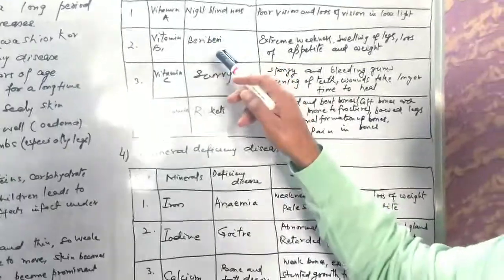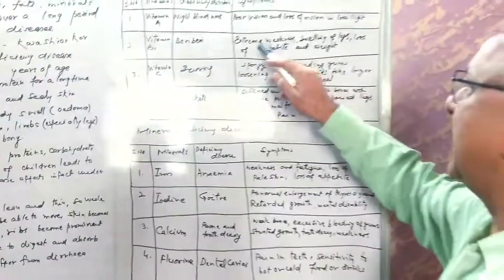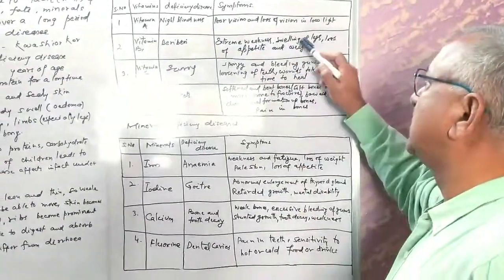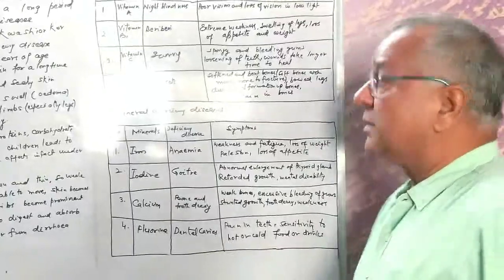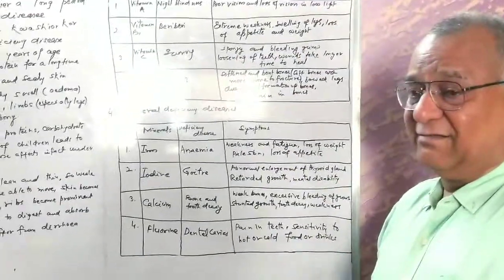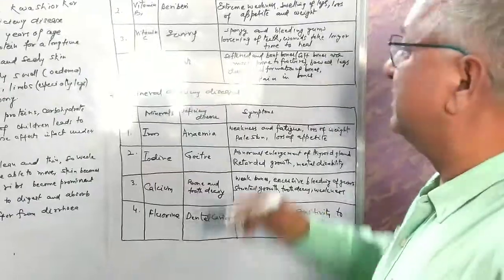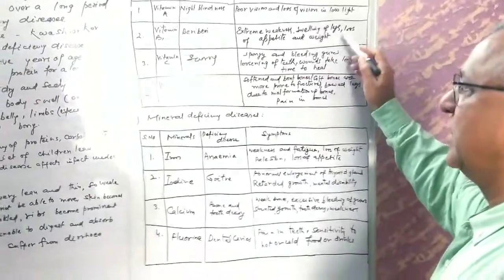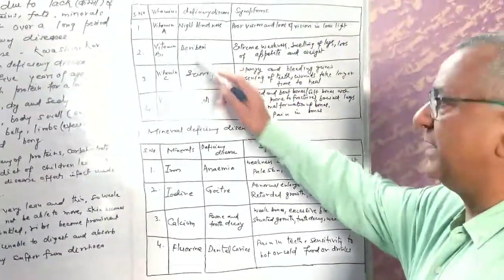Second category is Vitamin B1. The name of the disease is beriberi. Symptoms are: extreme weakness, swelling of legs, loss of appetite, and loss of weight also results in case of beriberi.